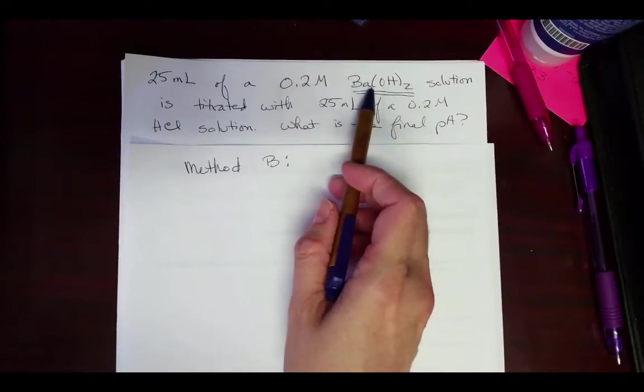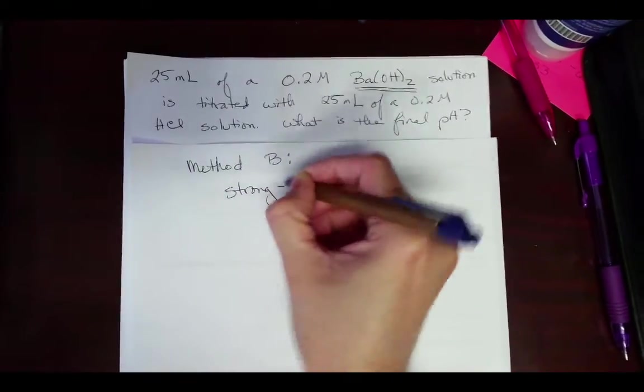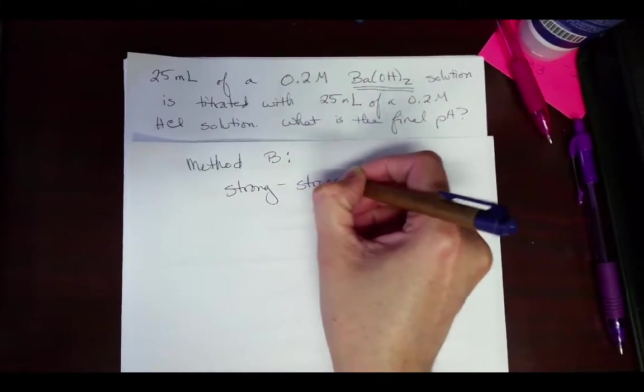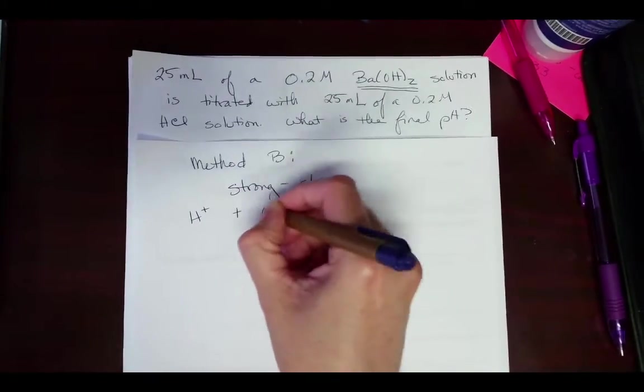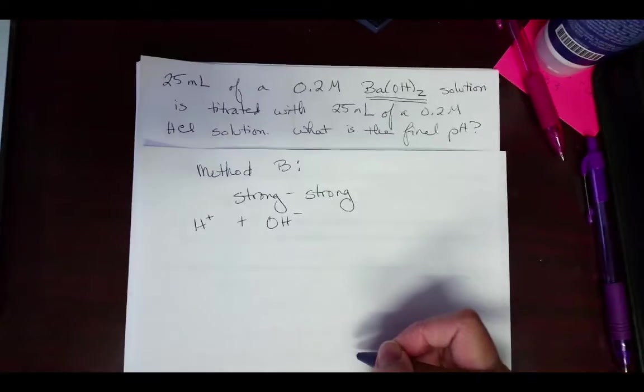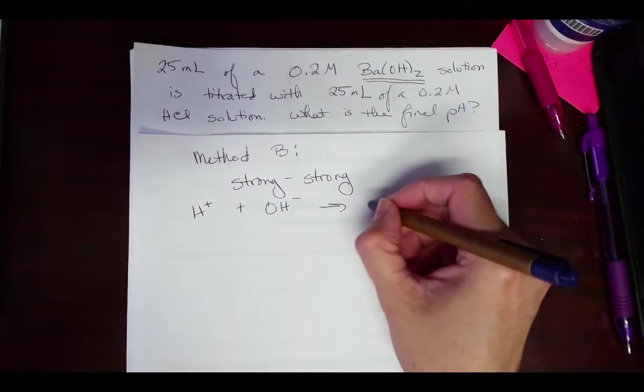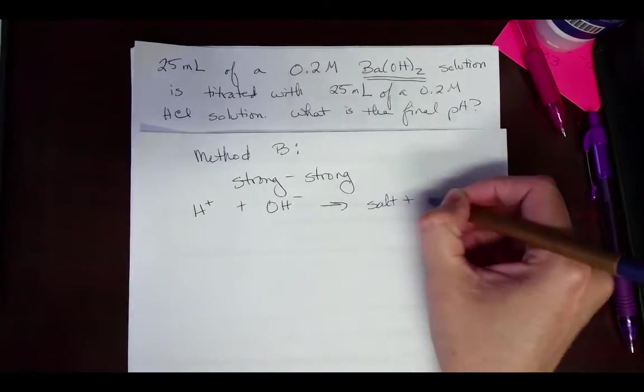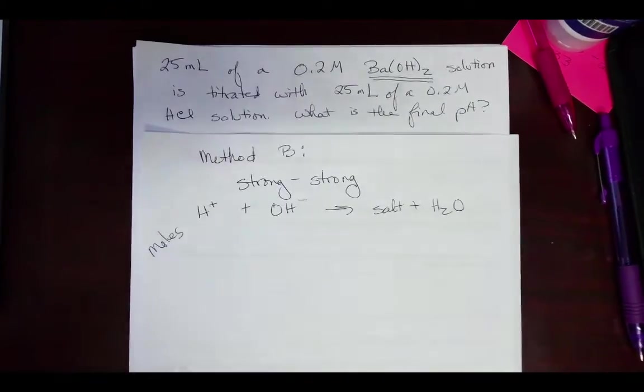So method B, you look at your barium hydroxide, you look at your HCl, you realize that this is a strong, strong titration. Once you realize that, really what you're reacting is you're just reacting H+ and OH- together. That's really what you have. So you still need your table in moles, and you can think to yourself, I am going to make a salt and water. I don't really care about that, but I can remember that. So this is all going to be in moles.